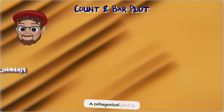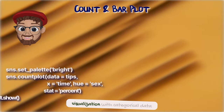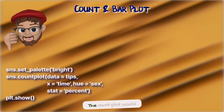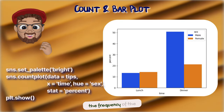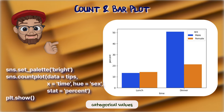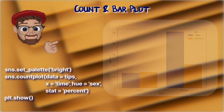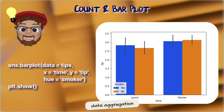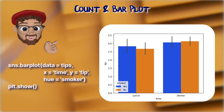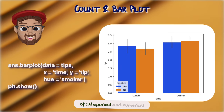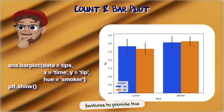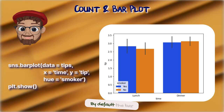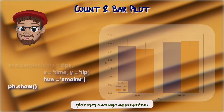A categorical plot is aimed to produce visualizations with categorical data. The count plot shows a bar with the frequency of the categorical values. A bar plot is a categorical plot that shows data aggregation — it uses a combination of categorical and numerical features to provide aggregation statistics. By default, the bar plot uses the average aggregation function.